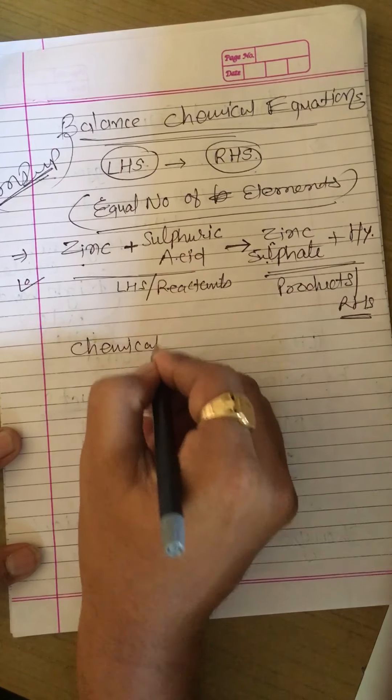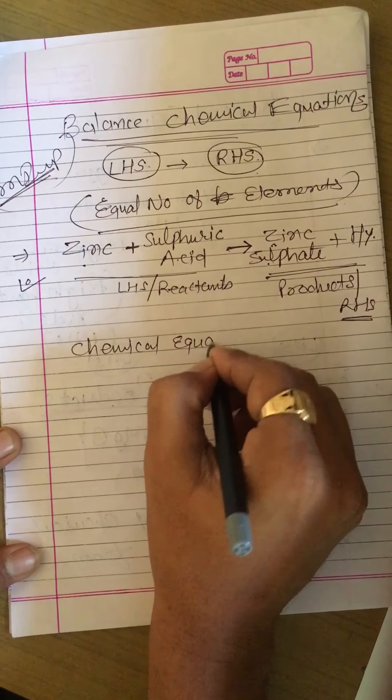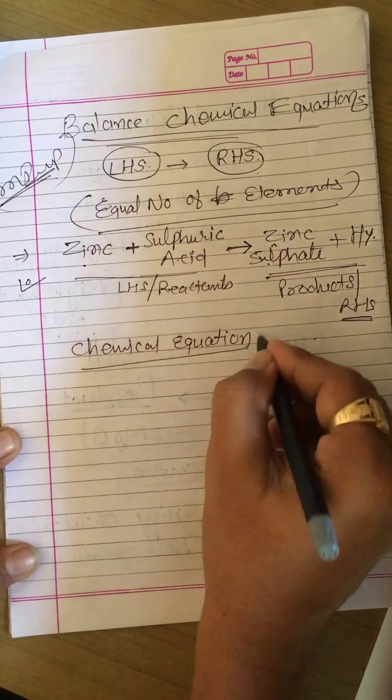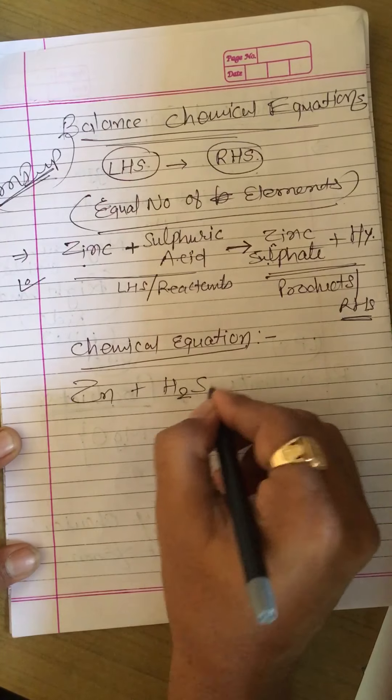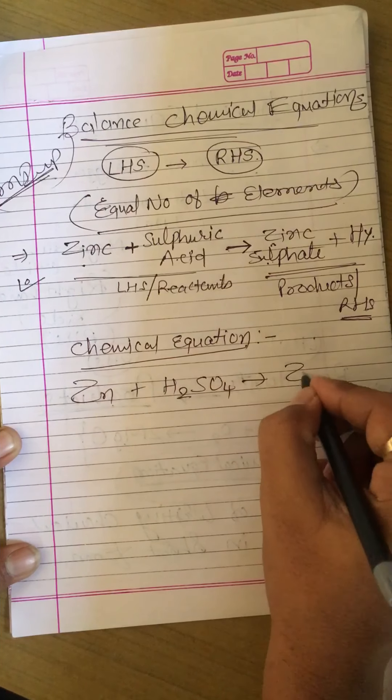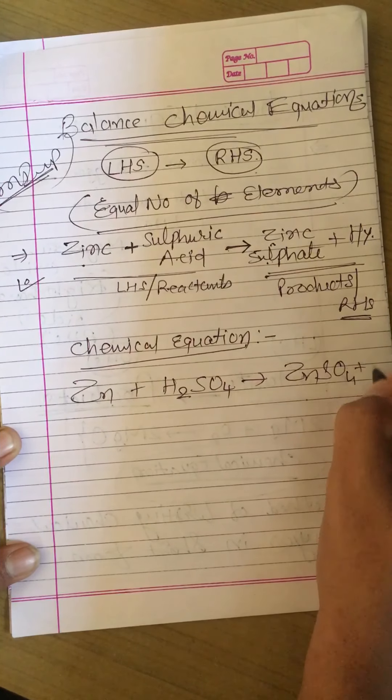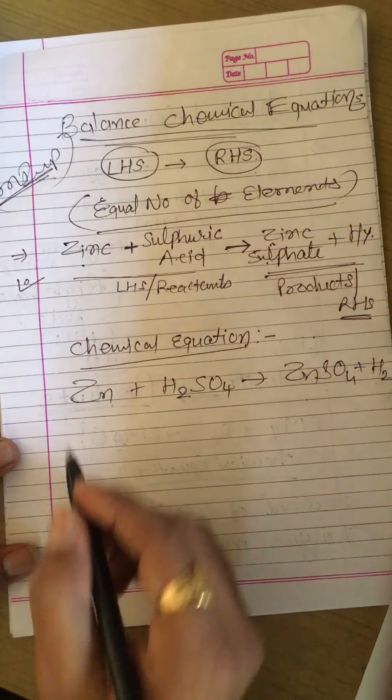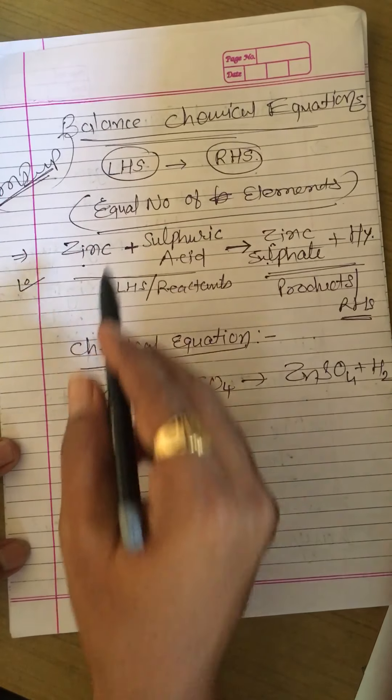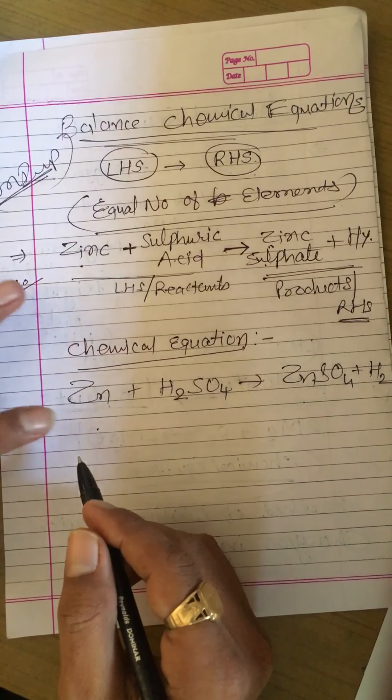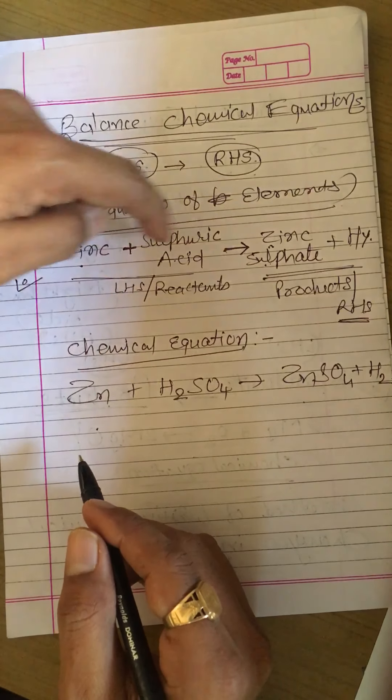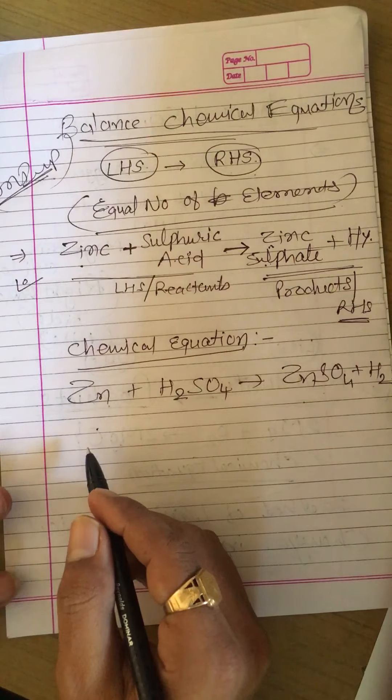Same reaction, then chemical equation in a symbolic form is like this: Zn + H₂SO₄ gives us ZnSO₄ + H₂. So these are the two methods - two various methods by which the chemical equation can be described. This is word form and this is symbolic form.